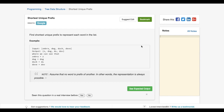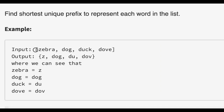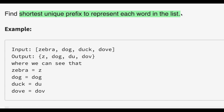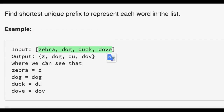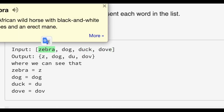The problem is called 'Shortest Unique Prefix', which is asked by Google. The problem states that we have a list of strings and we have to find the shortest unique prefix to represent each word in the list. For example, zebra can be represented as 'Z' because there is no other string in the list that can also be represented by Z. So Z is the unique prefix to represent zebra.